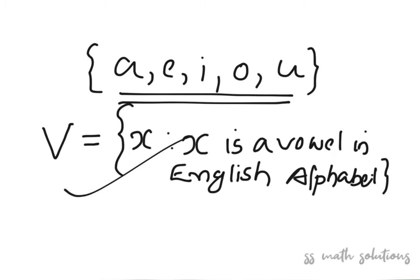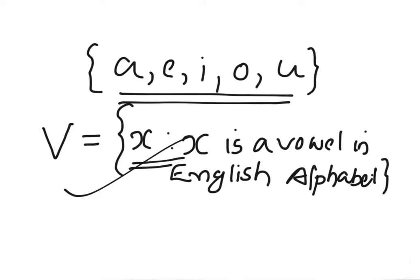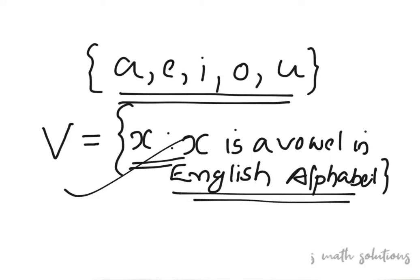So we can represent a set with two methods — either roster form or set builder form. In the set builder form, after the colon we are writing the characteristic property possessed by the elements of the set. So we read it as: x such that x is a vowel in the English alphabet. Hope you understood both methods.